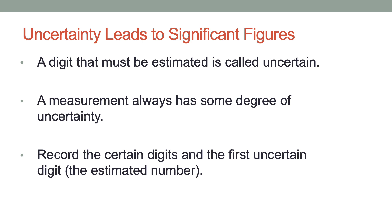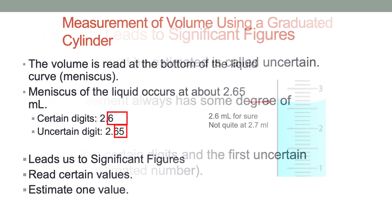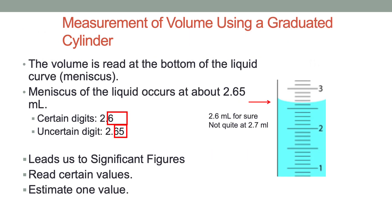Here's an example of measurement of volume using a graduated cylinder. The volume is always read at the bottom of the liquid curve, called the meniscus, represented here by the red arrow. You'll notice in the graduated cylinder the liquid forms a curve — we read the bottom of that curve. The cylinder measures milliliters; you see one, two, and three, and each milliliter is divided into tenths.